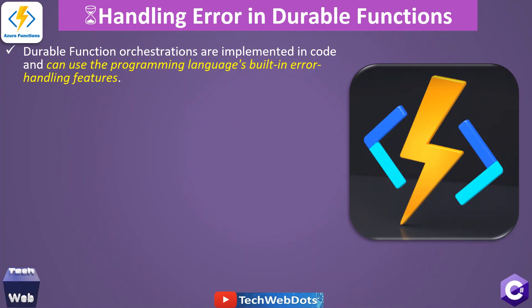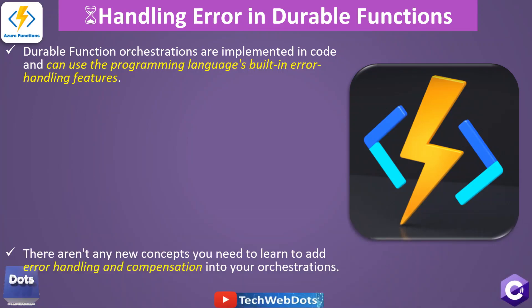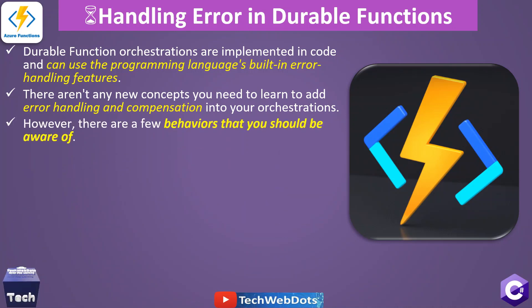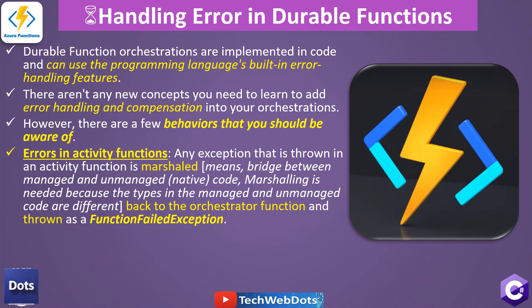So let's focus on the error handling part only. Durable Functions orchestrations are implemented in code, which we have already seen — don't worry, I will show you with code examples as well. We can use the programming language's built-in error handling features. There are not any new concepts that you need to learn to add error handling and compensation into your orchestrations.